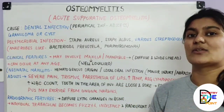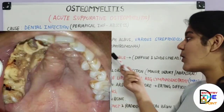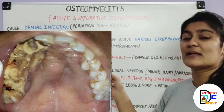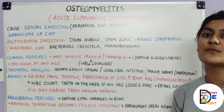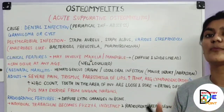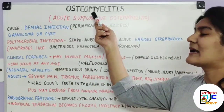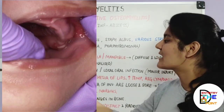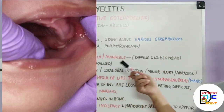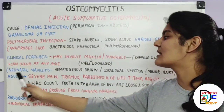Regarding clinical features, there is no specific predilection for gender or age group. It may involve either the maxilla or mandible. If it involves the maxilla, the infection is fairly localized to the site of initial infection. If it involves the mandible, the involvement is diffuse and widespread. It can occur at any age. A particular type occurring in infants and young children is known as neonatal maxillitis, which can be hematogenous in origin or due to local oral infections from minor injury or trauma.